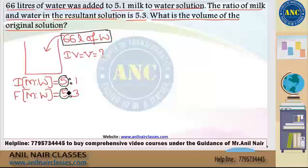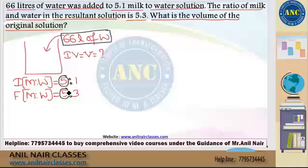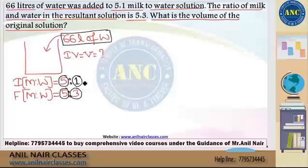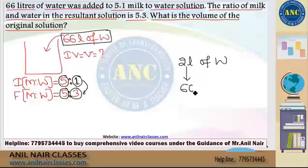In the previous question, the values were not same and I made them same. But in this question, they are already same, so I don't need to make it same again. That means, according to ratio, initially there was 1 liter of water and finally it is 3 liters of water. 1 liter of water became 3 liters — that means I added extra 2 liters of water according to ratio. But according to the question, I am adding 66 liters of water extra. So 2 is becoming 66 — multiply by 33.